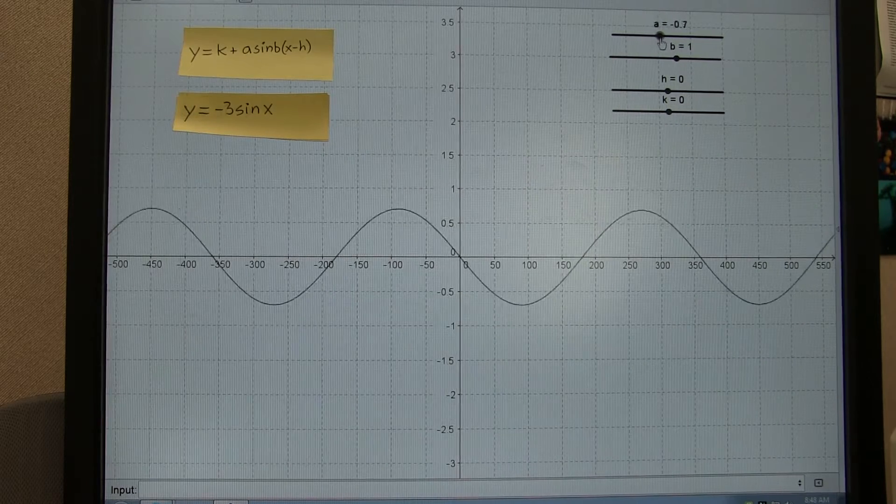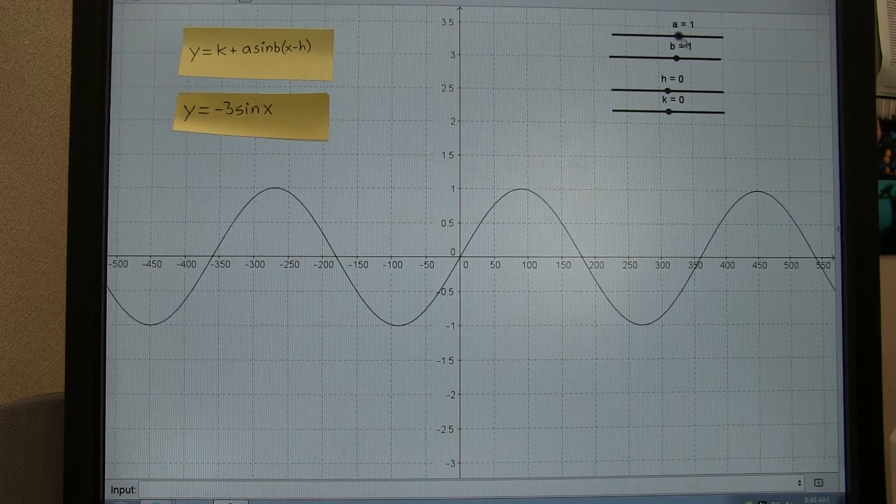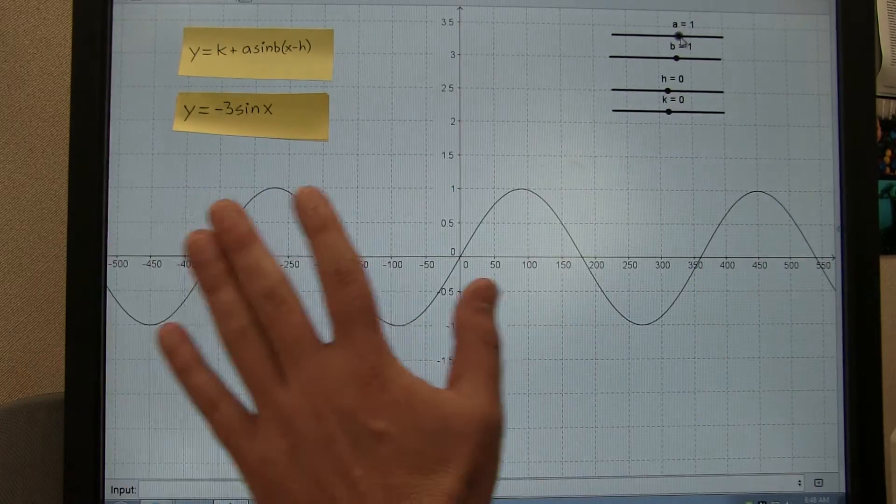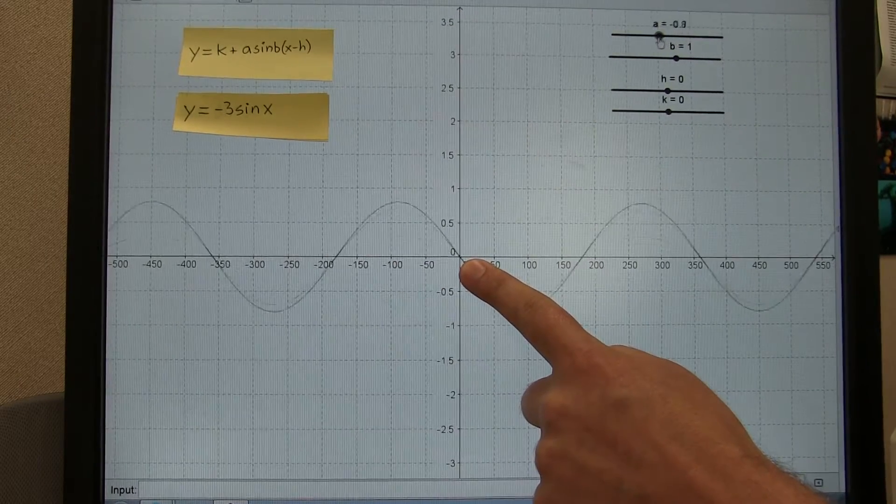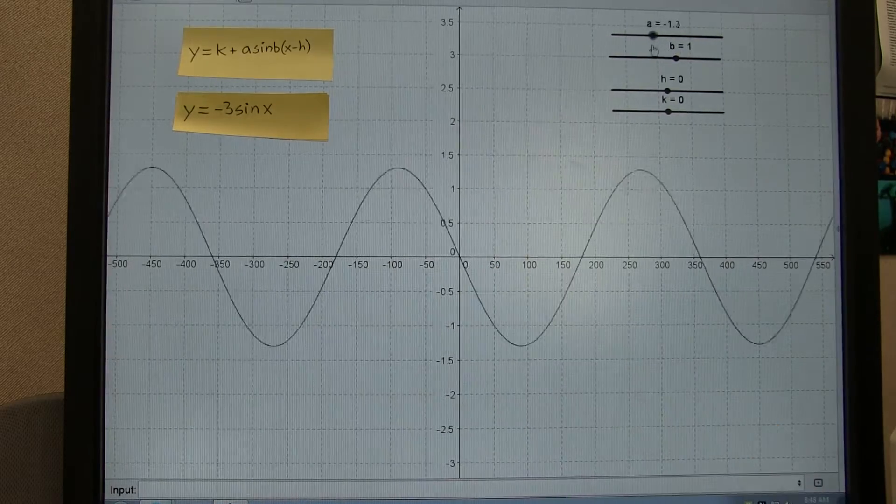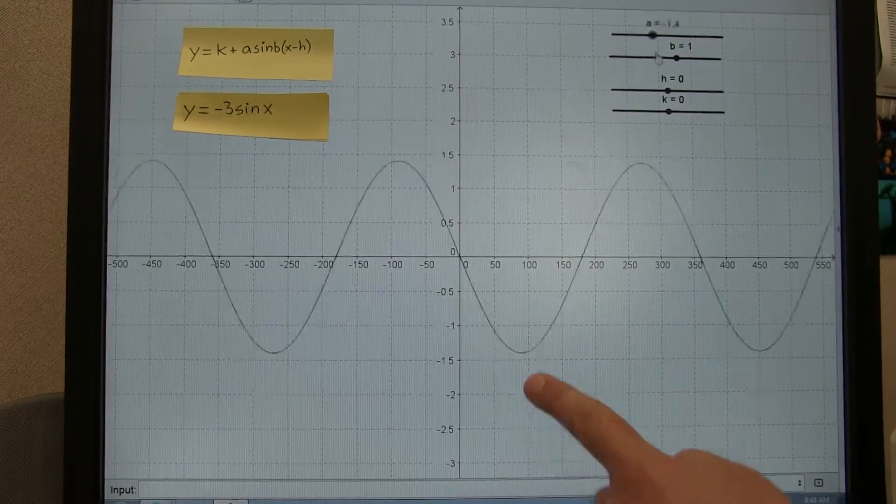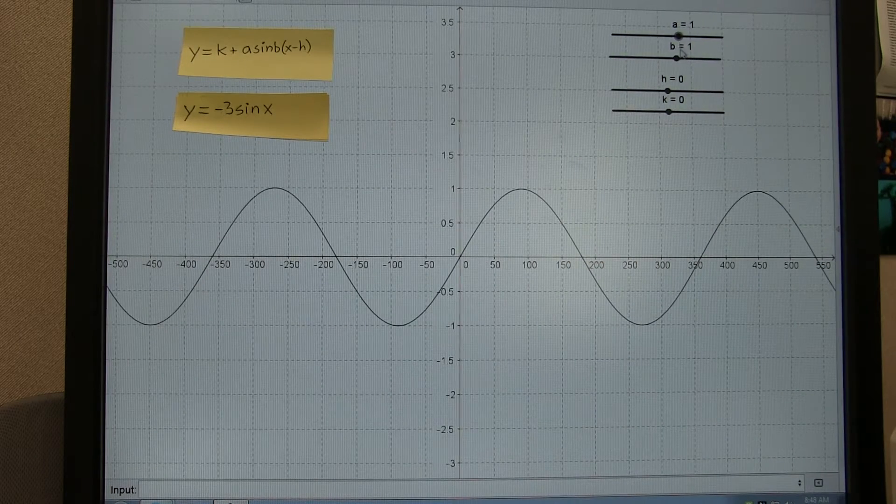Let's return this to 1. A affects the amplitude. Notice one thing. The position of the graph did not change. There's no shifting left or right or up or down. You can look at that 0, 0. No matter what we change A to, the graph is still there. And no matter what we change A to, we're always going to have a peak or a valley at 90 degrees. A does not affect the position of the graph. It just affects the shape of it.